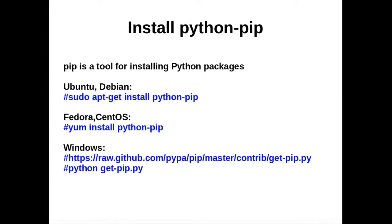We need a tool to install Python packages. We can use the pip tool for installing Python packages. If you are using an Ubuntu or Debian machine, you can use the apt-get command to install pip. If you are using Fedora or CentOS, you can use the yum command. If you are using a Windows system, you need to download the get-pip.py file and then install it using 'python get-pip.py'.